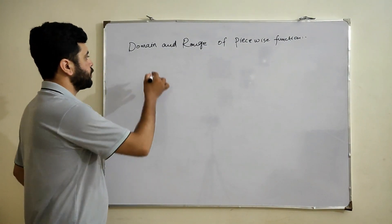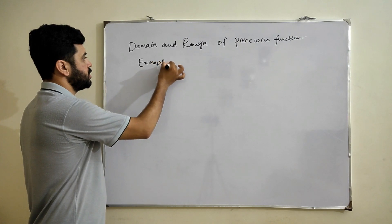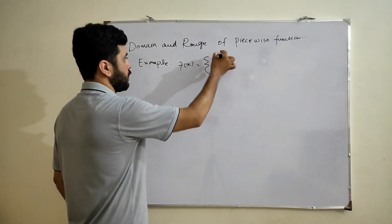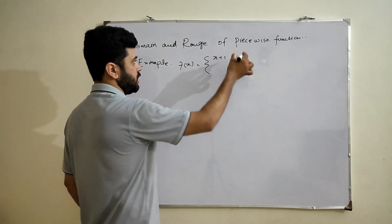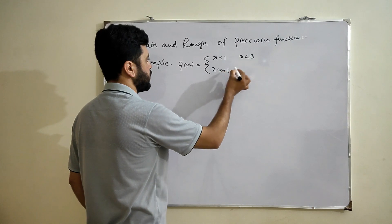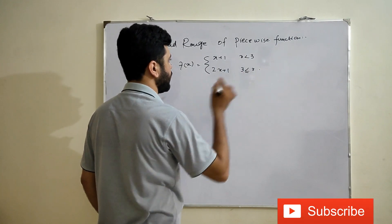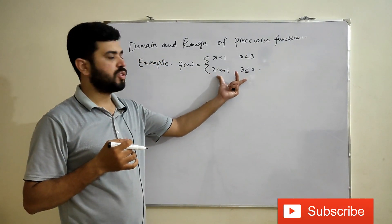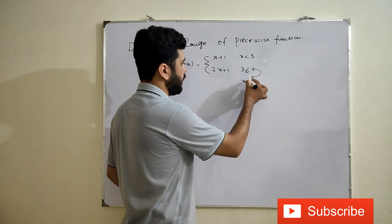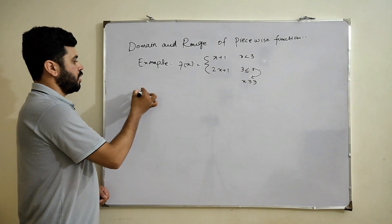Let's suppose we have a function f(x) defined as: x plus 1 for the condition x less than 3, and 2x plus 1 for x greater than or equal to 3. We have to find the domain and range of this function.